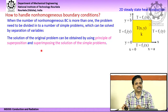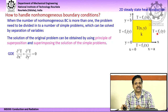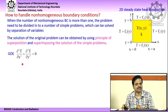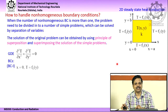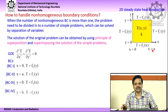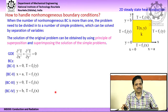This is done using the principle of superposition — you superimpose the solutions of the simple problems. The governing differential equation is: ∂²T/∂x² + ∂²T/∂y² = 0, with boundary conditions: at x = 0, T = f₁(y); at x = a, T = f₂(y); at y = 0, T = f₃(x); and at y = b, T = f₄(x). This is the original problem.